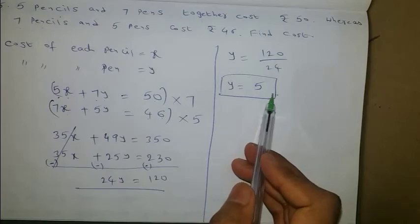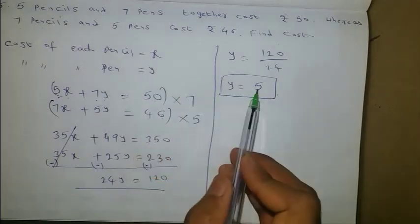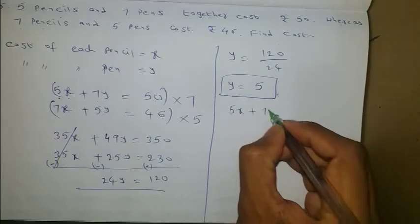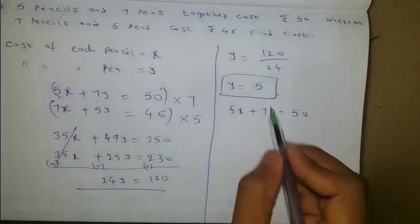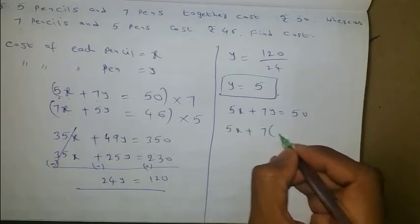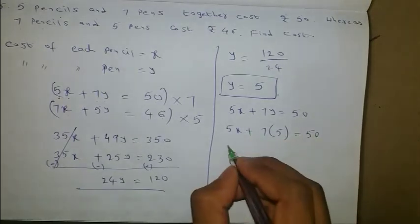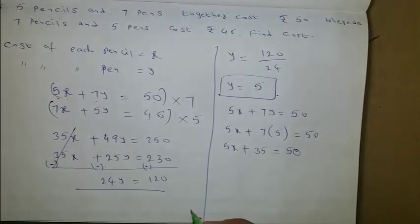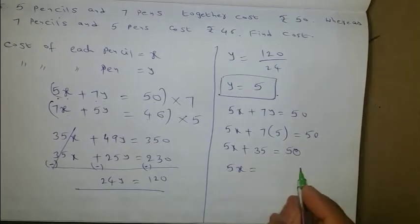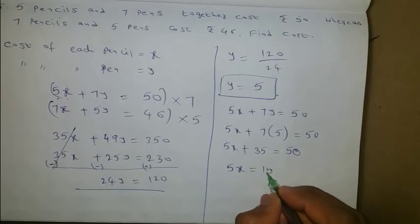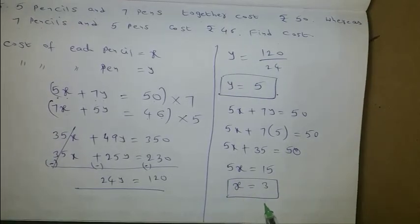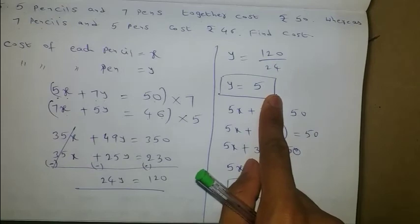Substituting y equals 5 into 5x plus 7y equals 50: 5x plus 35 equals 50, so 5x equals 15, giving x equals 3. x is the cost of each pencil, so each pencil costs 3 rupees and each pen costs 5 rupees.